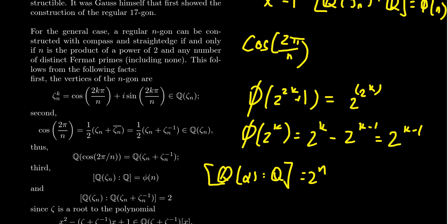Gauss was made famous because he was the first one to discover that you could construct using a compass and straightedge the regular 17-gon, which 17 is a Fermat prime.